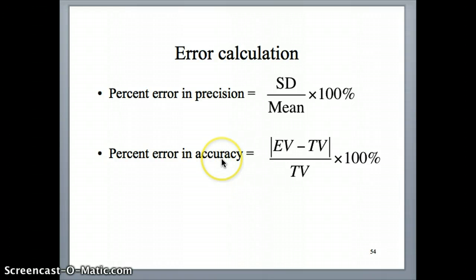The bigger the number is, the more error you have in your precision, basically the broader your distribution is. As far as accuracy is concerned, usually the percent error is expressed using this equation, which is EV here stands for experimental value or sometimes experimental average, right? Depending on what it is we're trying to calculate.